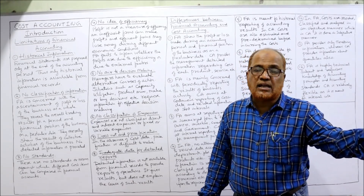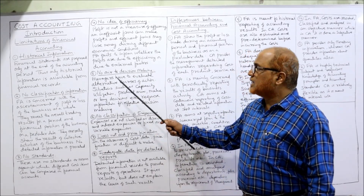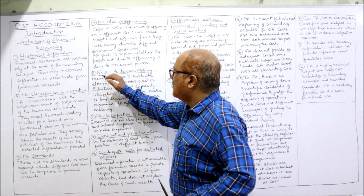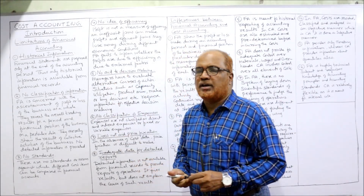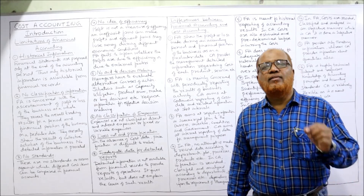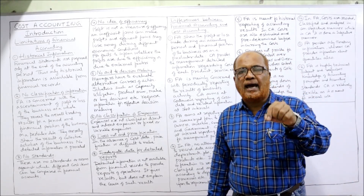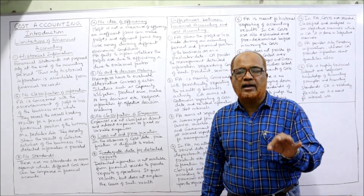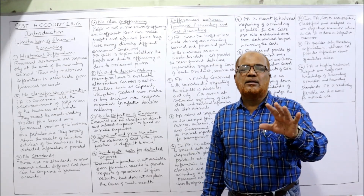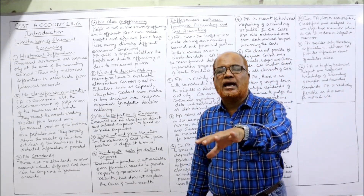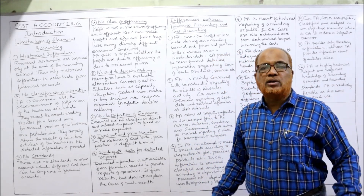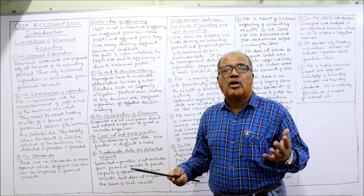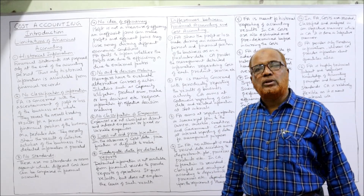The fifth limitation is no aid to decision-making. Financial accounting will not be of much help to the management. Management requires information on a day-to-day basis, but financial accounting provides information only at the end of the year. Till that time management cannot wait, so financial accounting is not of much help to management for decision-making.